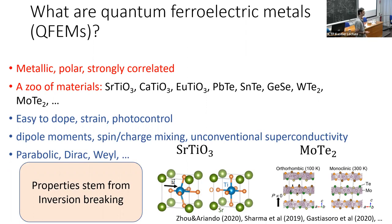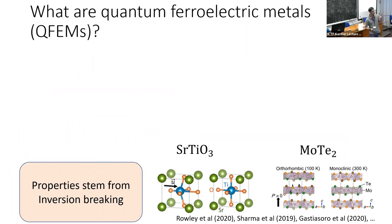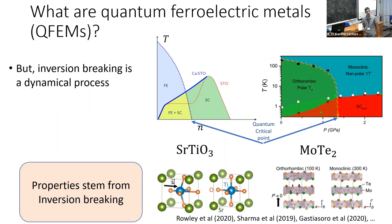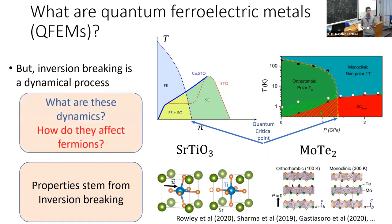The problem we've been thinking about is the following: at the end of the day, this process of inversion breaking is a dynamical process. In many of these materials you can take them and, through some tuning parameter — doping or pressure — tune them in and out of the inversion-broken state. That means you go through a quantum critical point and are driven by dynamical fluctuations that break inversion symmetry. That usually comes with electric fields, which doesn't make sense in the context of a metal. So you really need to ask: what are these dynamical processes that break inversion in a metal, how do they affect the fermions, and can we use them for something useful? That is the problem I'm going to try to address.